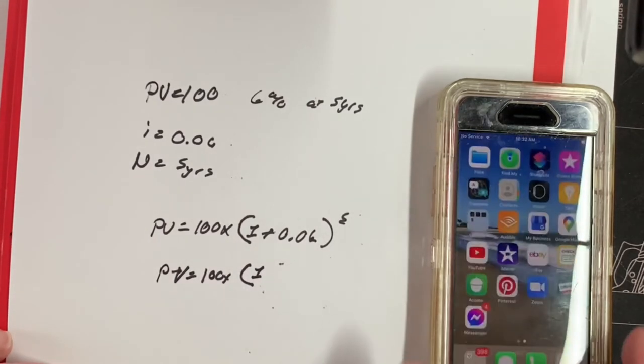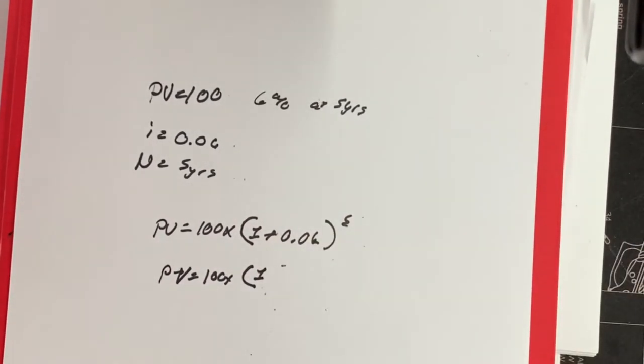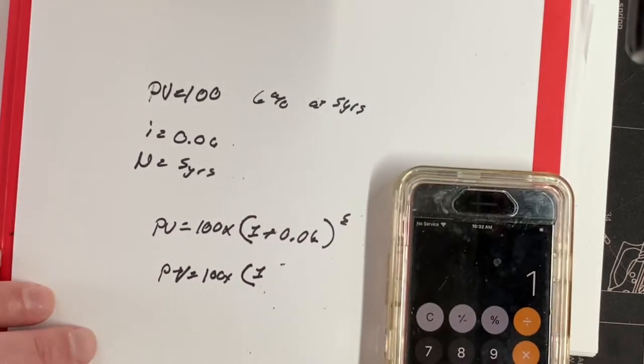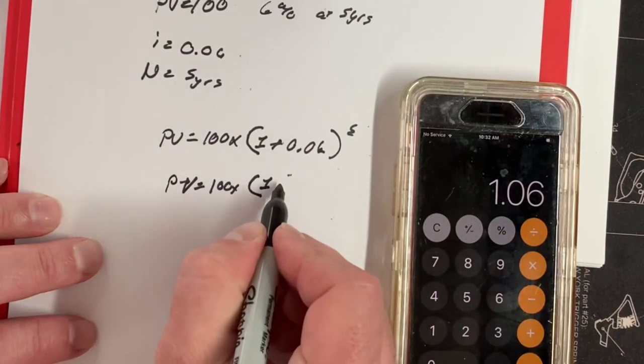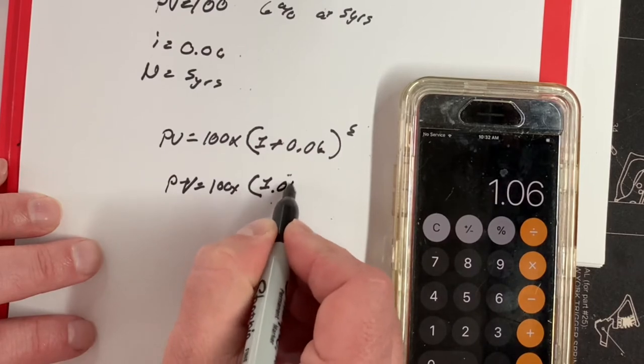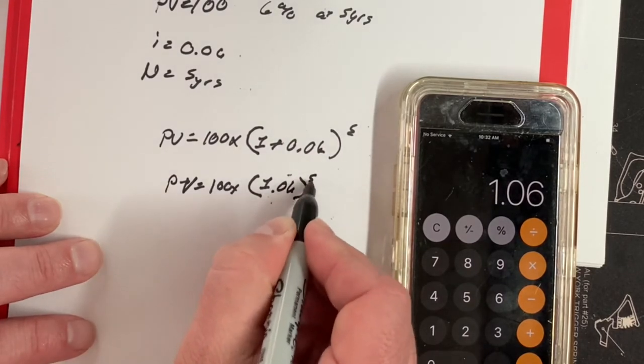I'm going to do it on the calculator real quick. 1 plus 0.06 equals 1.06. To the fifth power.